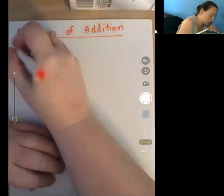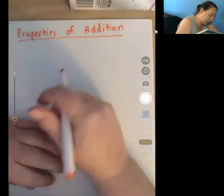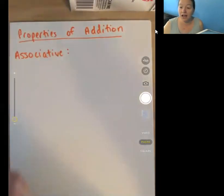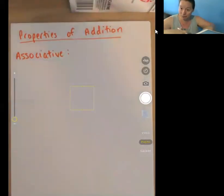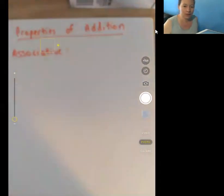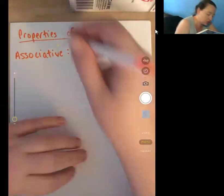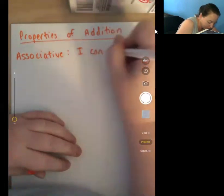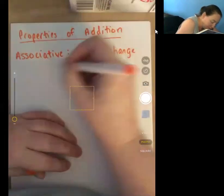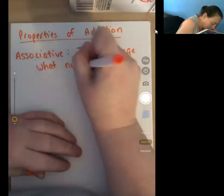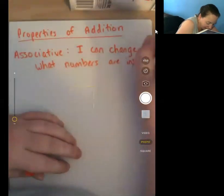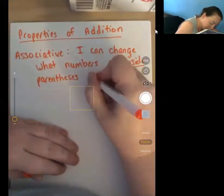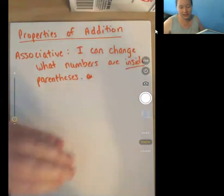Now addition has a couple of different properties. The first property that we're going to talk about is the associative. Now associative, it's like associates. It's people that you get along with, people that you hang out with. So those are your associates. So the associative property of addition means I can change what numbers are inside parentheses.